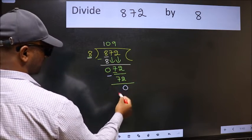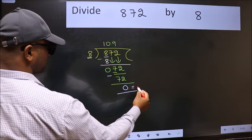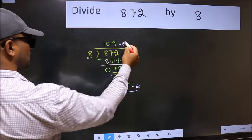No more numbers to bring it down, so we stop here. This is our remainder and this is our quotient.